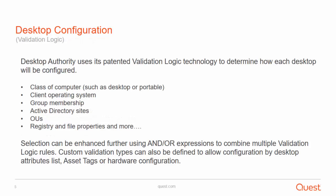Desktop Authority uses its patented validation logic technology to determine how each desktop will be configured. The validation logic technology is based on over 20 validation types, including the class of computer — such as desktop or portable — client operating systems, group membership, Active Directory sites and OUs, and registry and file properties.